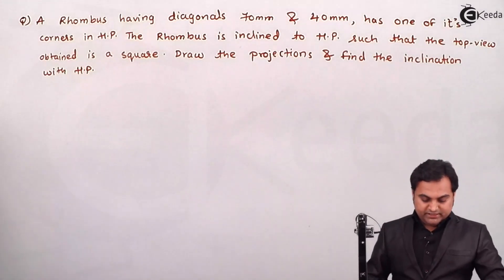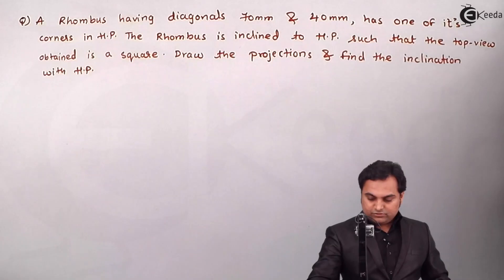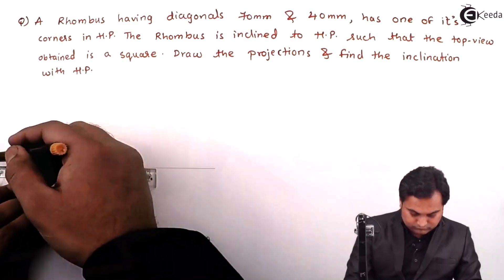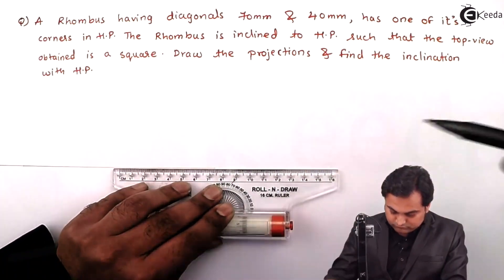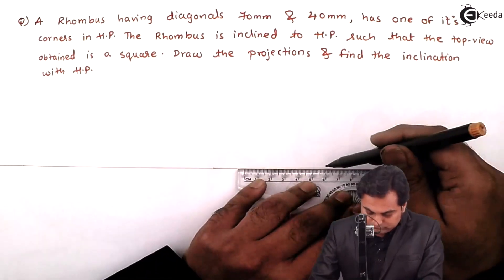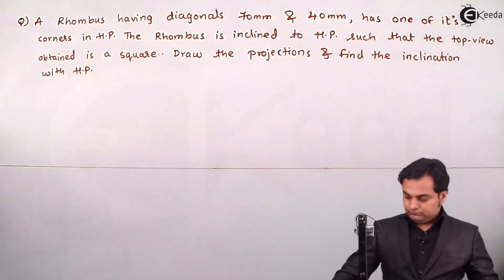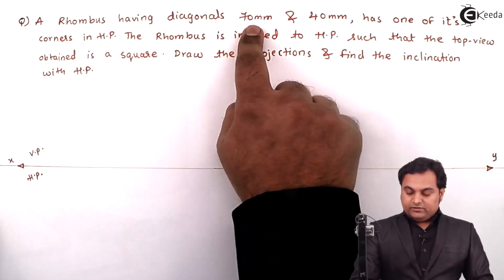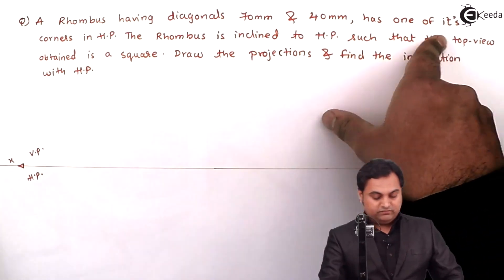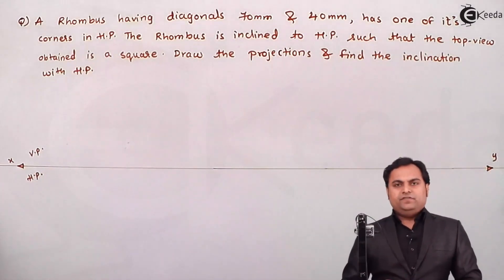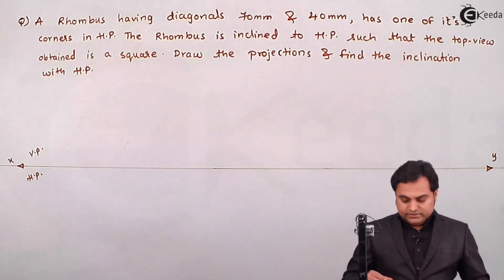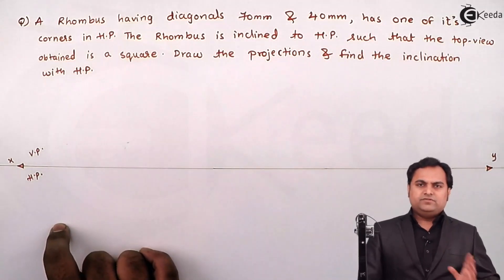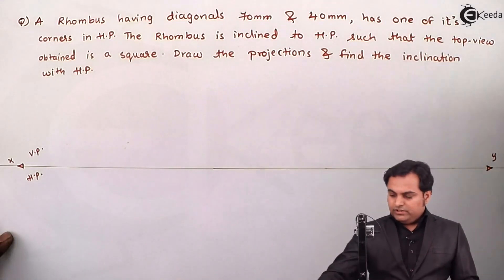I'll explain the condition first by drawing the XY line. The rhombus having diagonals 70 and 40 has one of its corners in HP. If one corner is in HP, it means the entire rhombus is in HP — that is, the rhombus is visible from the top view. It is resting on the corner, and that corner reference will be on the left-hand side, so I'll draw that rhombus.